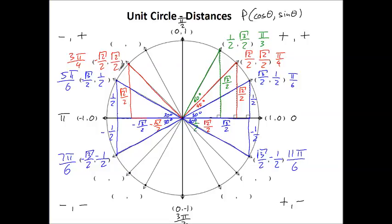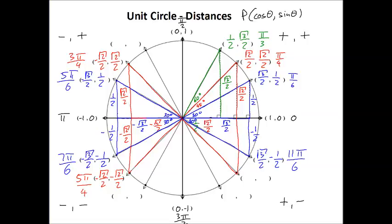Taking that same triangle and reflecting it downwards, we get to 5π/4, where both coordinates are negative: (−√2/2, −√2/2). Reflecting back over the y-axis gives us the triangle at 7π/4. Our y-coordinate is still negative but the x-coordinate is positive again: (√2/2, −√2/2). And we're done with our 45-45-90 triangles.